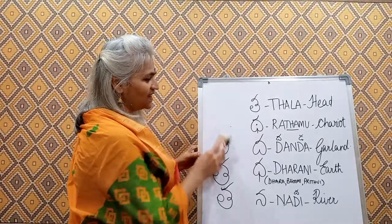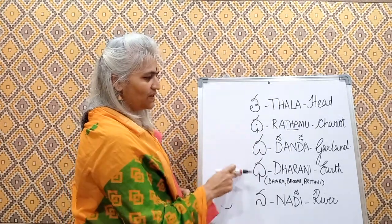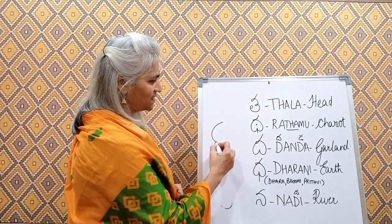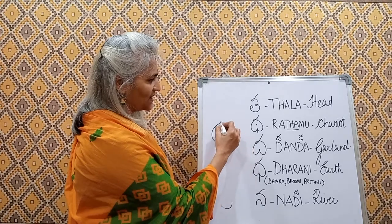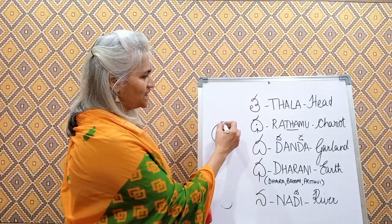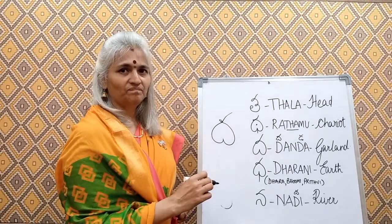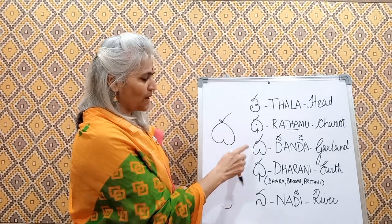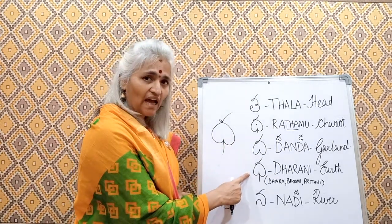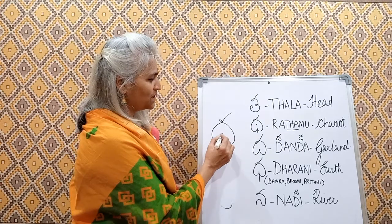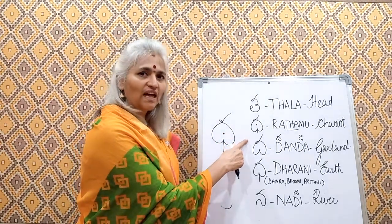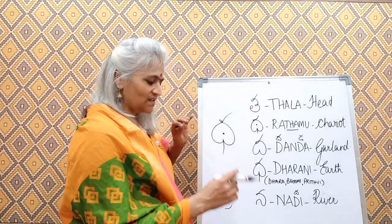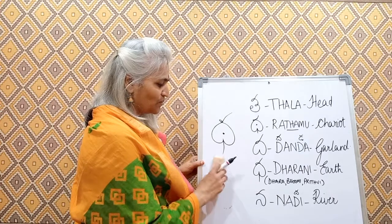The next three letters have a basic symbol similar to an upturned heart. You draw it like this and like this and like that. If you just put a tick on top, that is da. If you put a standing line, it is dha. If you put a dot in the center, it is ta — the maha pranam of ta. It is simply an upturned heart with three variations.